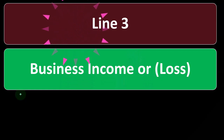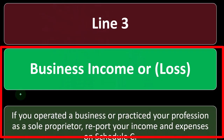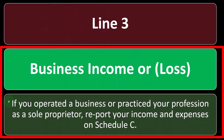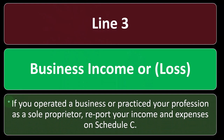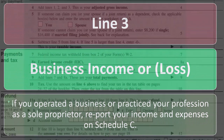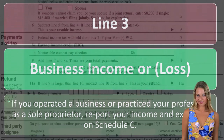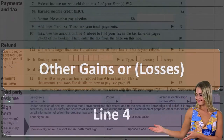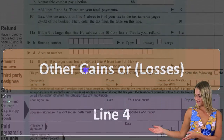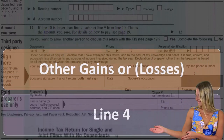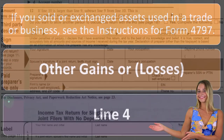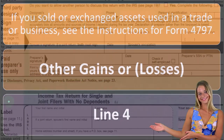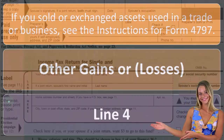Line 3 is business income or loss. If you operated a business or practiced your profession as a sole proprietor, report your income and expenses on Schedule C. We can also look at line 4, other gains or losses — if you sold or exchanged assets used in a trade or business, see the instructions for Form 4797.